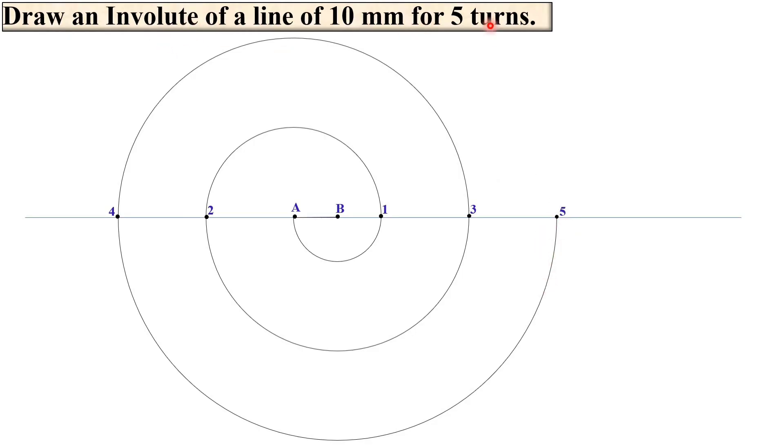So we have to draw the involute of a line for the 5 turns. So here you can see this is the involute of a line for the 5 turns. So it is very simple concept.